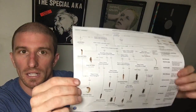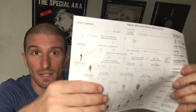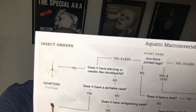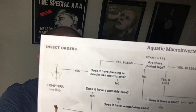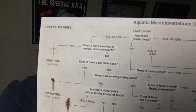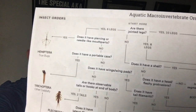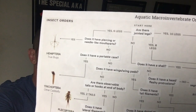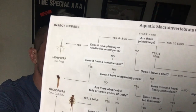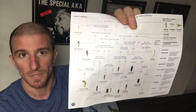The second chart is a key, which means it has questions, and when you answer the questions it helps you identify the animal. The first question asks: are there joined legs? Based on the number of legs — yes six, yes ten, yes eight, or no — you go to the next question. When you find that answer, the next question allows you to slowly work down all the questions until you find that particular animal.